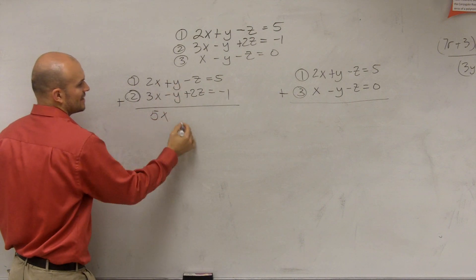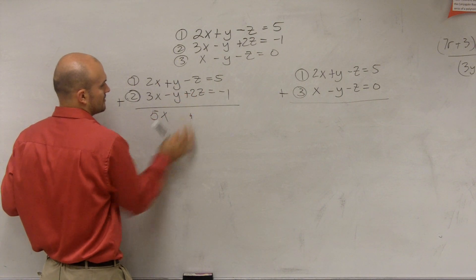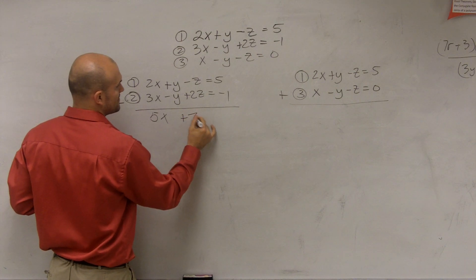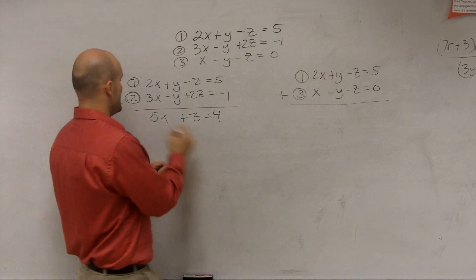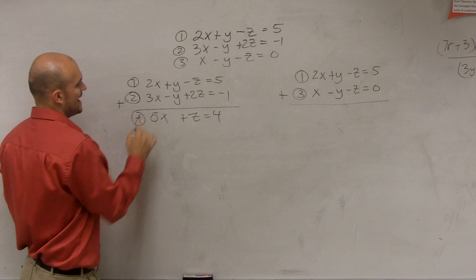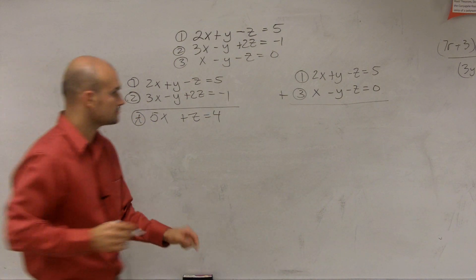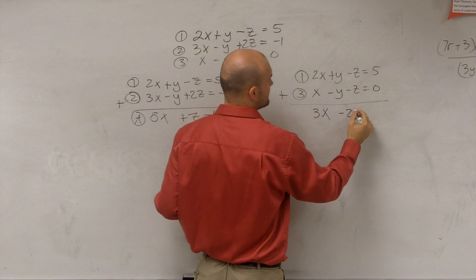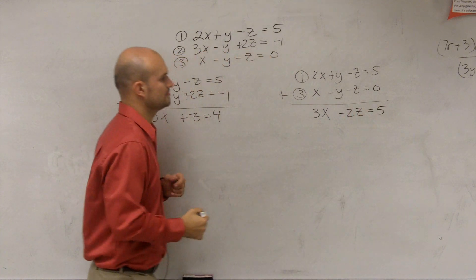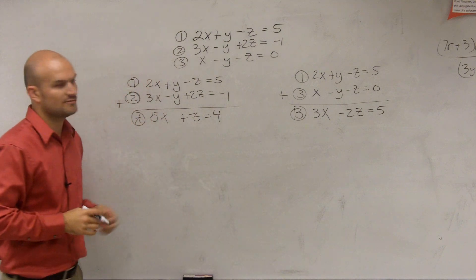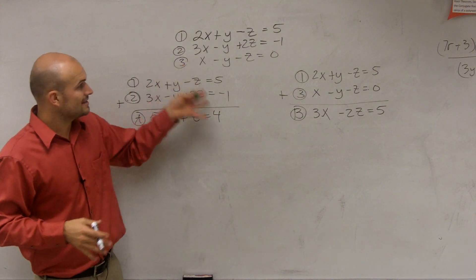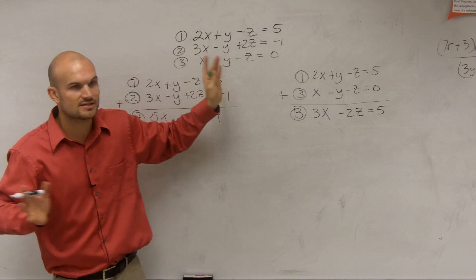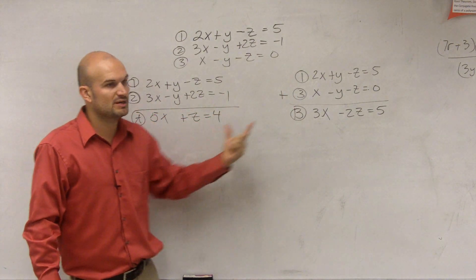When you add them up, you get 5x — y goes to zero — plus z equals 4. We label this resulting equation A. Then adding the next pair, I get 3x — y goes to zero — so negative 2z equals 5. I call the second equation B. So by eliminating y, I've now created two equations with two variables.